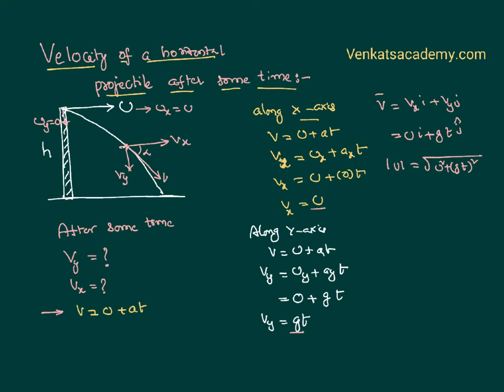It makes an angle α with the horizontal. We can calculate this: tan α = Vy/Vx, so α = tan⁻¹(Vy/Vx). We have calculated Vy and Vx.